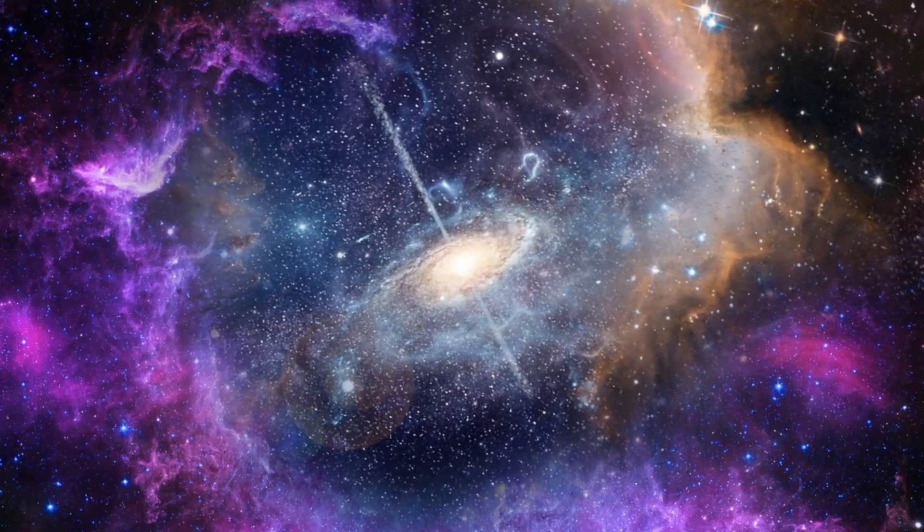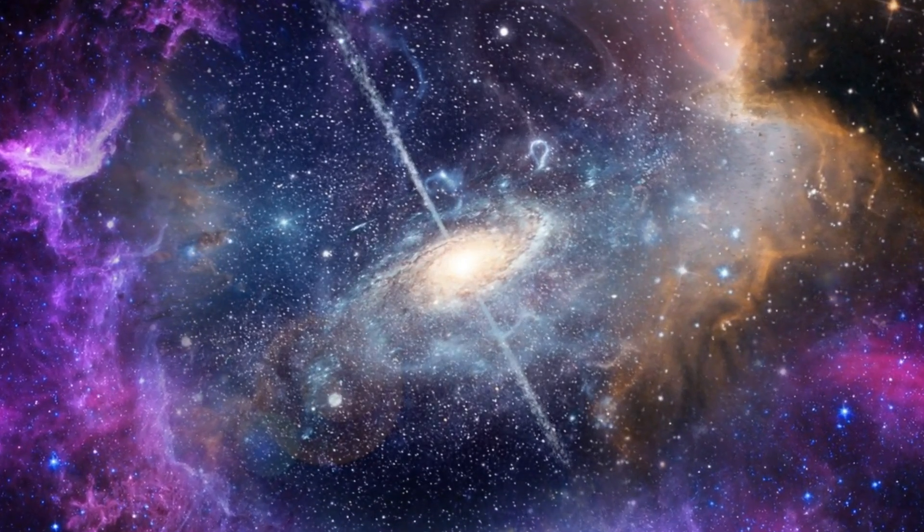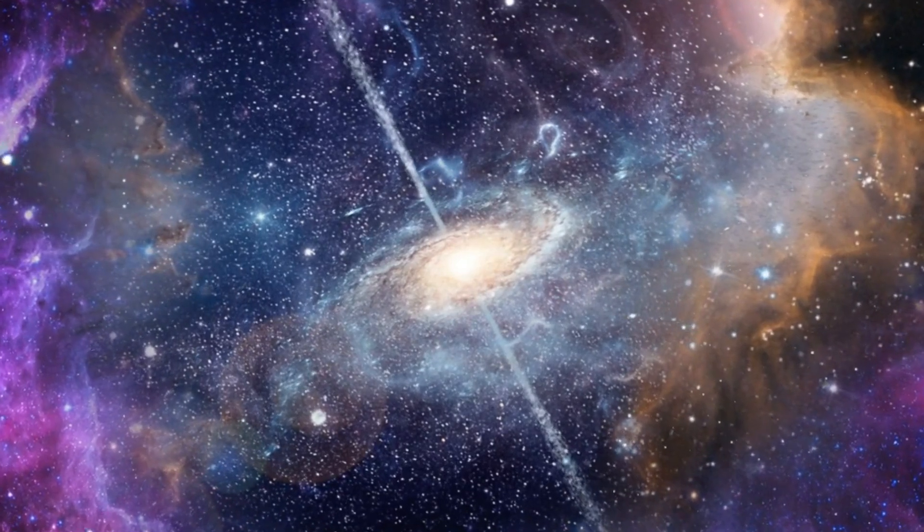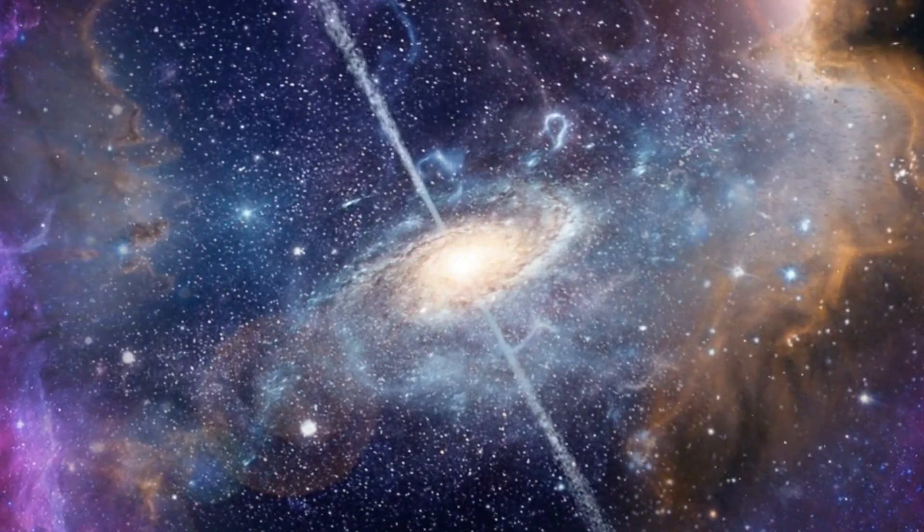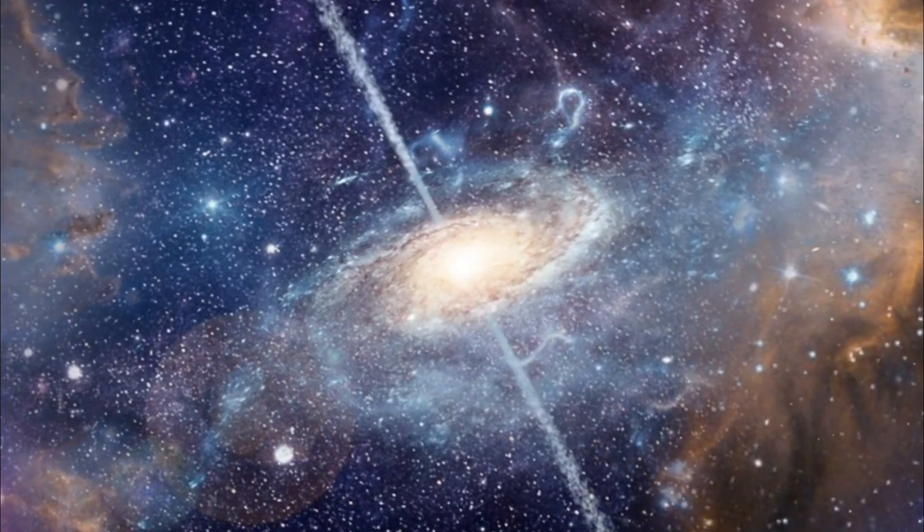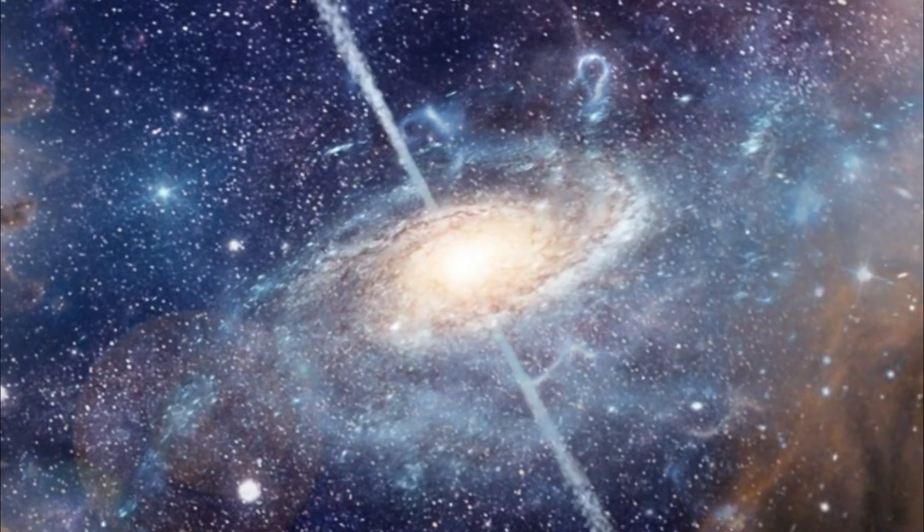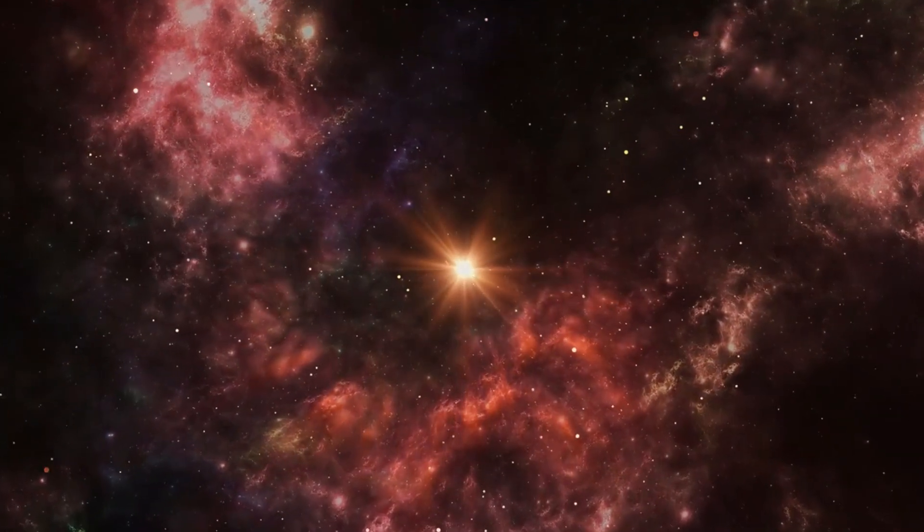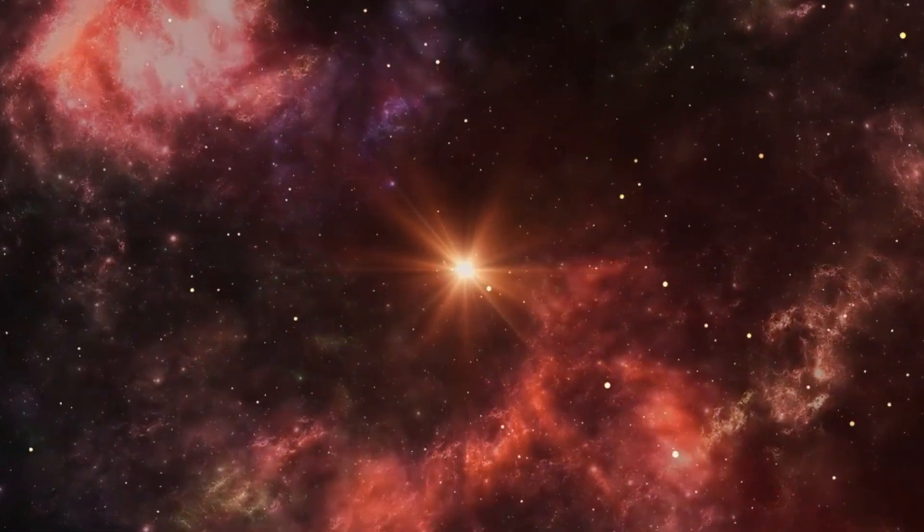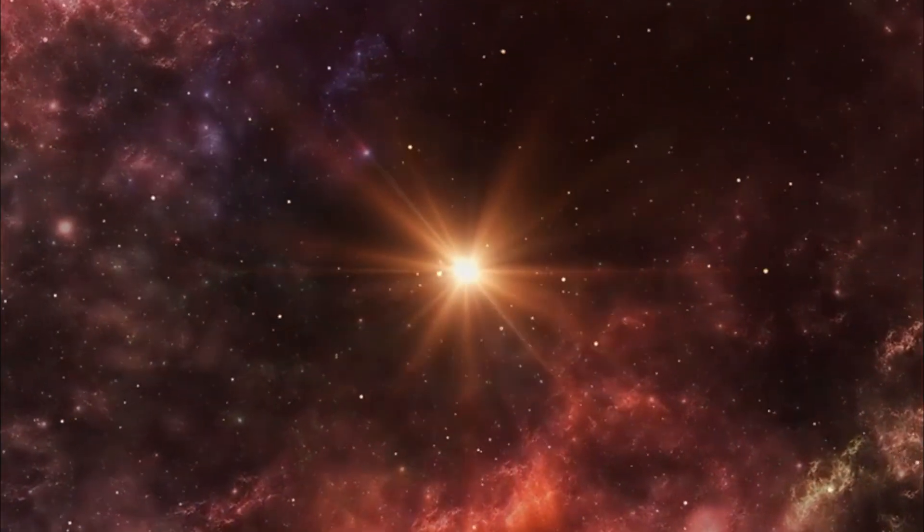These red monsters aren't just big, they're forming stars at an extraordinary rate, much faster than we ever thought possible for galaxies that existed so early. These galaxies, located just a few hundred million years after the Big Bang, are converting gas into stars up to twice as efficiently as galaxies from the same period. In fact, they're even more efficient than many galaxies that formed later on. So, what's behind this remarkable star-forming frenzy?